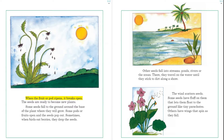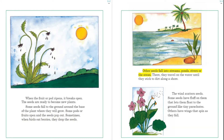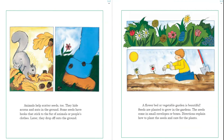The fruit or pod protects the seeds. When the fruit or pod ripens, it breaks open and the seeds are ready to become new plants. Some seeds fall to the ground around the base of the plant where they will grow. Some pods or fruits open and the seeds pop out. Sometimes when birds eat berries, they drop the seeds. Other seeds fall into streams, ponds, rivers, or the ocean, where they travel on the water until they stick to dirt along a shore. The wind scatters seeds too — some seeds have fluff on them that lets them float to the ground like tiny parachutes.